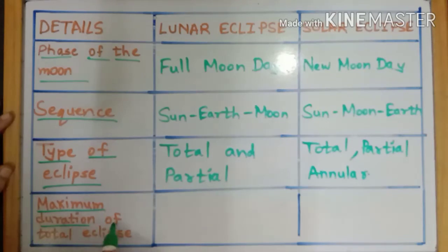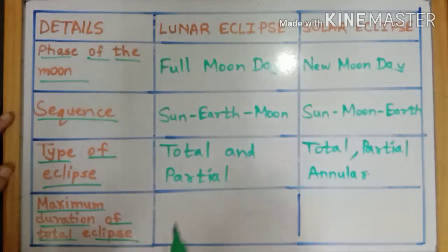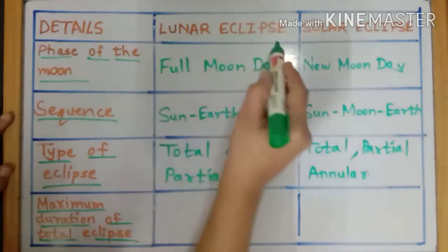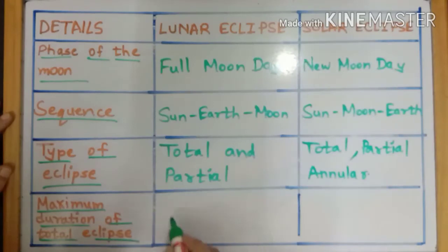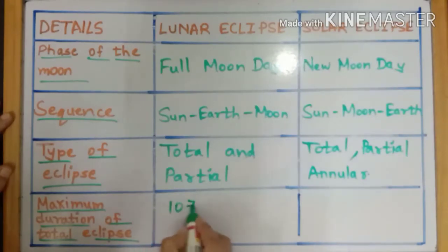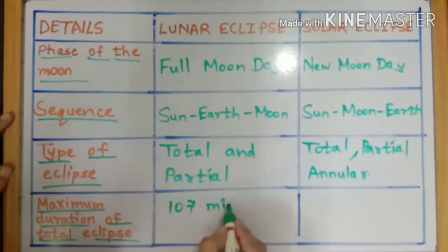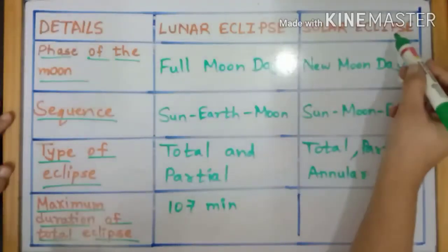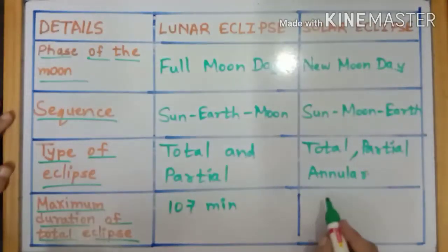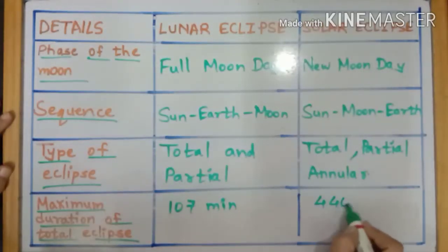The maximum duration of a total eclipse: for a lunar eclipse, it is 107 minutes, whereas for a solar eclipse, it is 440 seconds.